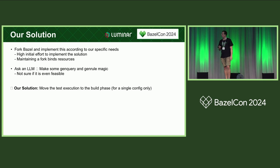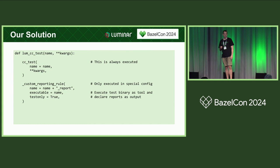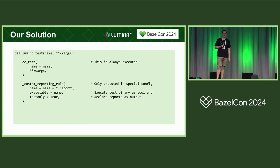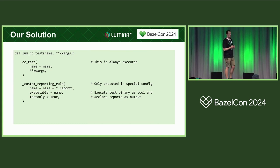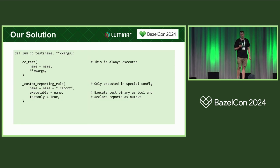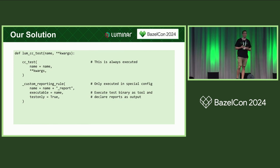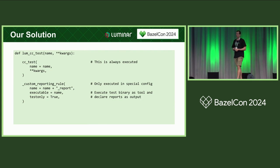How does the implementation look? We simply wrapped cctest with our own Loom cctest, which by default just forwards all the arguments to cctest. So for the default use case, it behaves exactly the same as cctest. And then for a certain config, we have a custom rule that on top of the test defines a report target, takes the compiled test binary, and passes it as a tool to our custom rule. The custom rule defines all the reports we want as output, and with that we can already depend on the reports being generated from the tests.